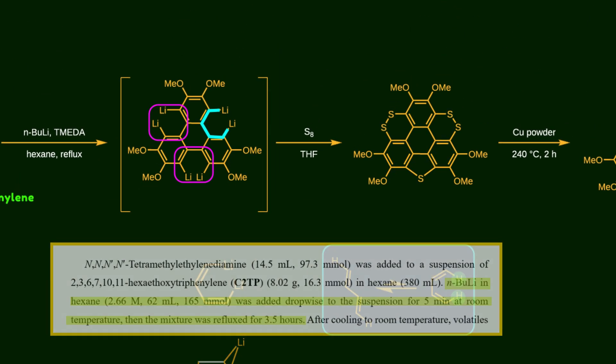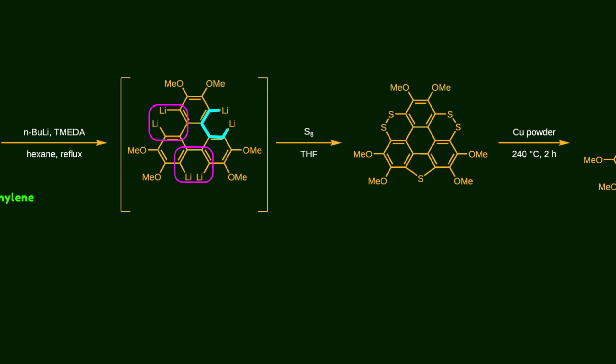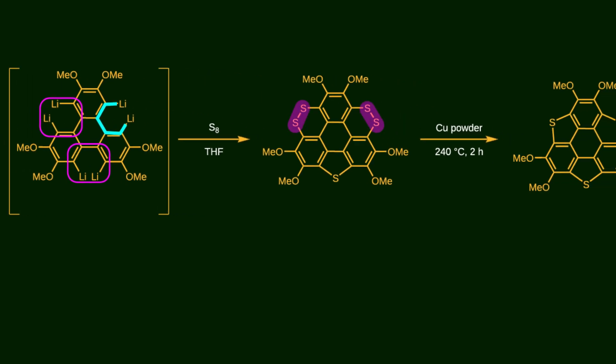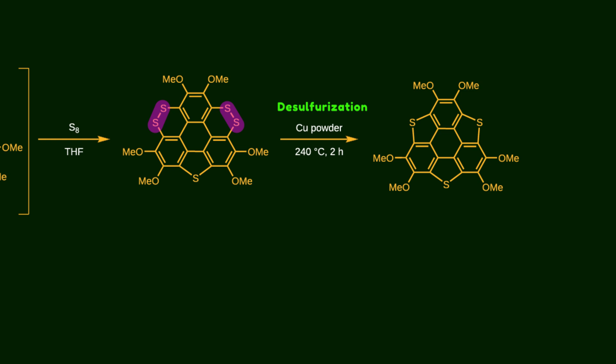Under basic conditions, sulfur powder is added to the reaction mixture to create an intermediate containing two S-S bonds. To achieve the desired product, in the desulfurization step, copper powder is added to cleave the S-S bonds, leaving us with the final product.